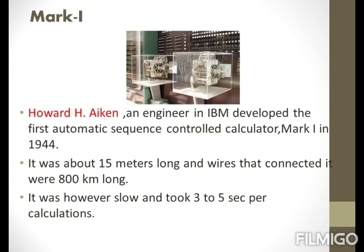Mark 1. Howard H. Aiken was the primary engineer at IBM who developed the first automatic sequence controlled calculator — the Mark 1 — in the year 1944. Mark 1 was about 15 meters long and the wires that connected it were 800 kilometers long. The machine was slow and it took 3 to 5 seconds per calculation, but it was also the first fully automatic calculator.